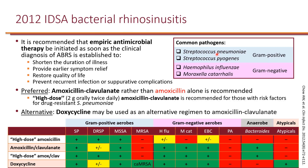Keep in mind that the common pathogens for bacterial rhinosinusitis are Strep pneumo and Strep pyogenes, which are gram-positive, and H. influenzae and Moraxella catarrhalis, which are gram-negative. Gram-positives stain blue on gram stain — so they are positively blue for you — and gram-negative organisms stain pink on the gram stain.